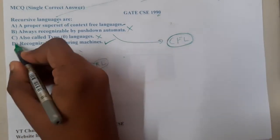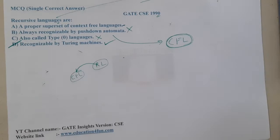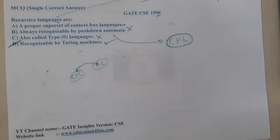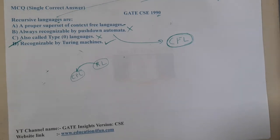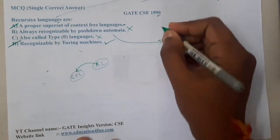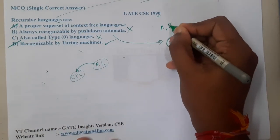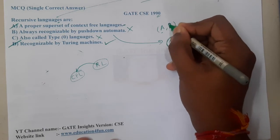Along with option D, I think this question is a multiple select question. They asked this at that time. Recursive languages are a proper subset of context free languages is also true. So basically A and D will be the correct answers for this question.